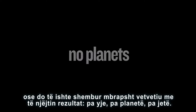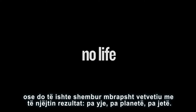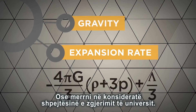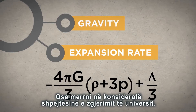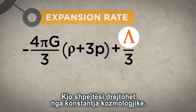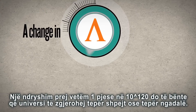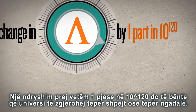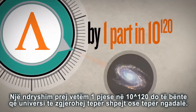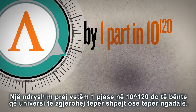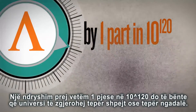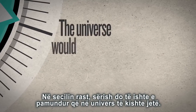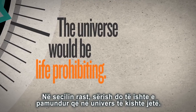No stars, no planets, and no life. Or consider the expansion rate of the universe. This is driven by the cosmological constant. A change in its value by a mere one part in 10 to the 120th parts would cause the universe to expand too rapidly or too slowly. In either case, the universe would, again, be life-prohibiting.